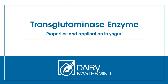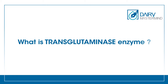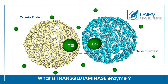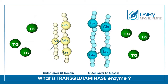Transglutaminase enzyme: properties and application in yogurt. Transglutaminase is a kind of enzyme that catalyzes inter- and intra-crosslinks in milk proteins by covalent bonds.